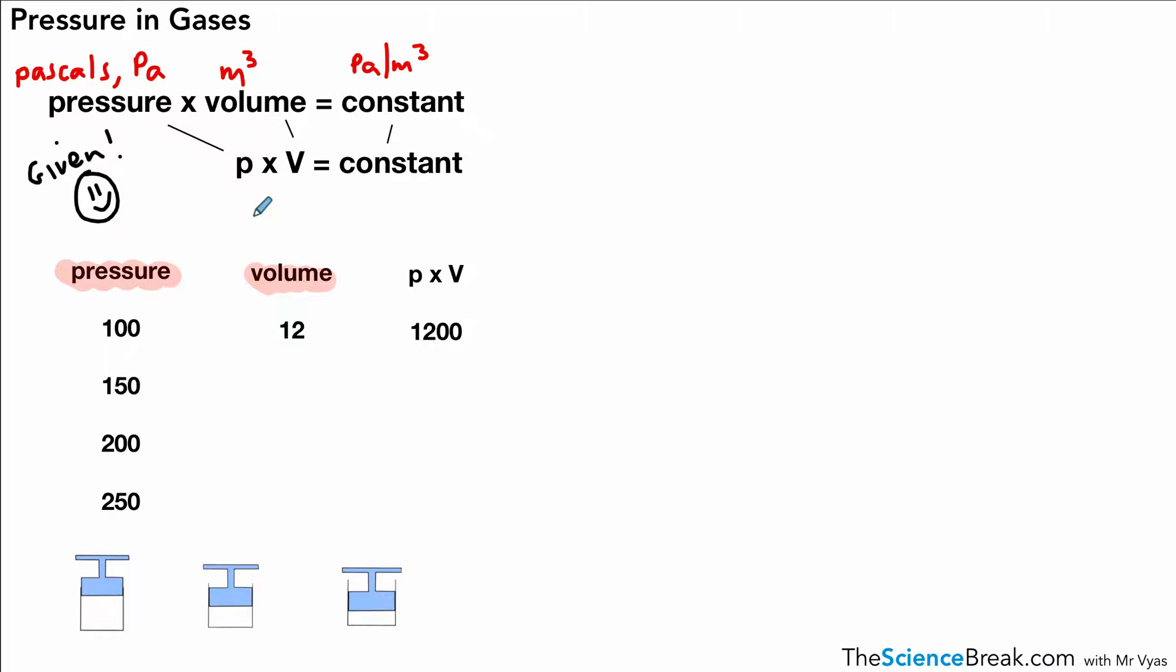If we have gas in a container at constant temperature, pressure times volume will always be constant as long as we don't let gas in or out. For example, at 100 times 12, we get 1200 - our constant. When we increase the pressure to 150, 200, or 250, the constant stays the same. The volume must change so that pressure times volume remains 1200. As pressure increases, volume decreases, but the constant always stays the same.